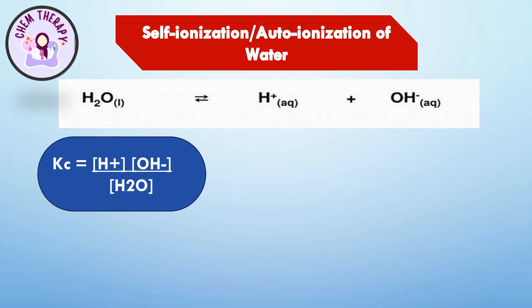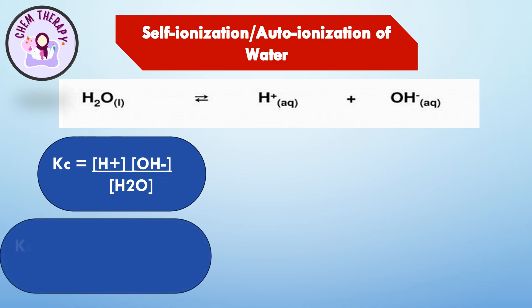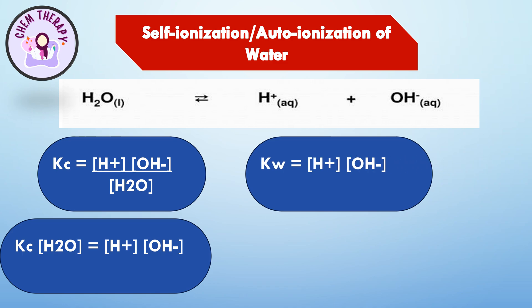The concentration of water is considered constant because water doesn't ionize much and mostly remains as H₂O. By moving the concentration of water to the other side of the equation, it gets multiplied with Kc. Since Kc and the concentration of water are both constants multiplied together, they can be replaced with a third constant, Kw.